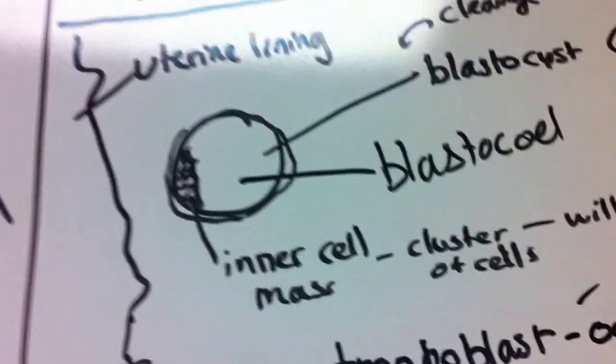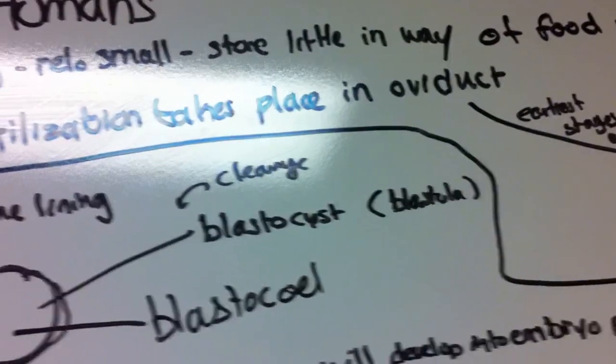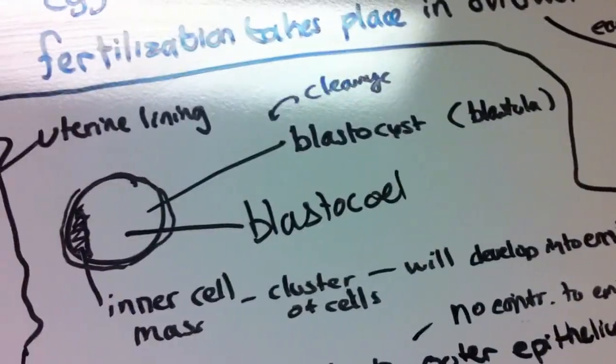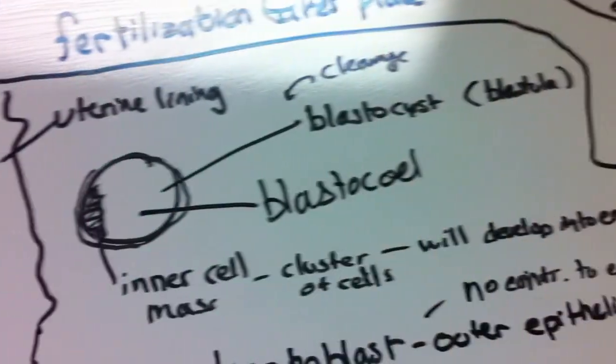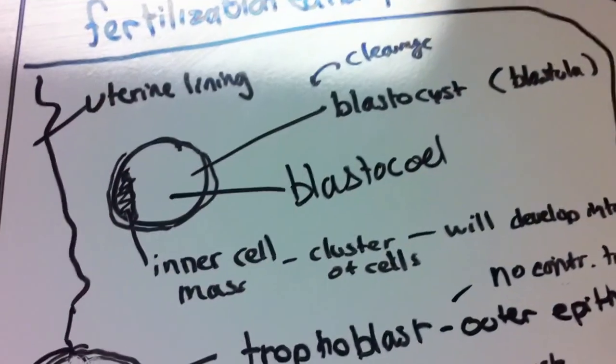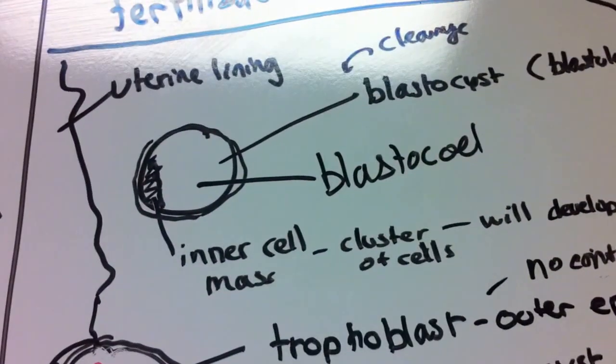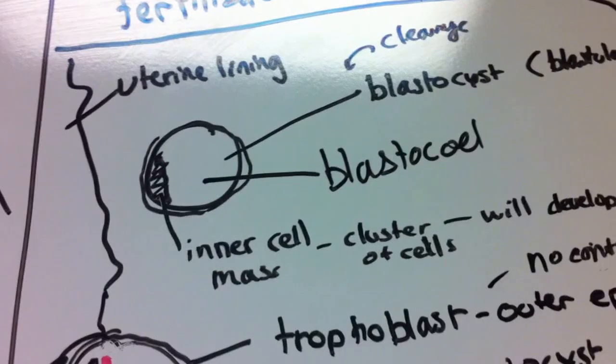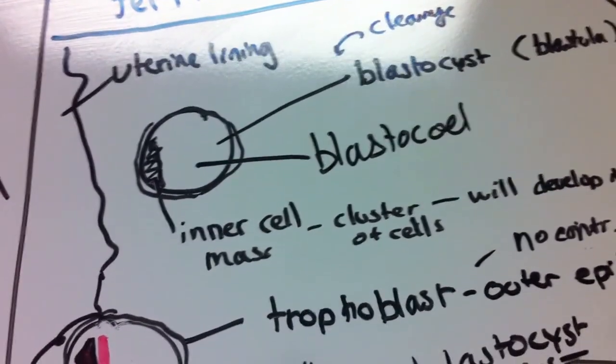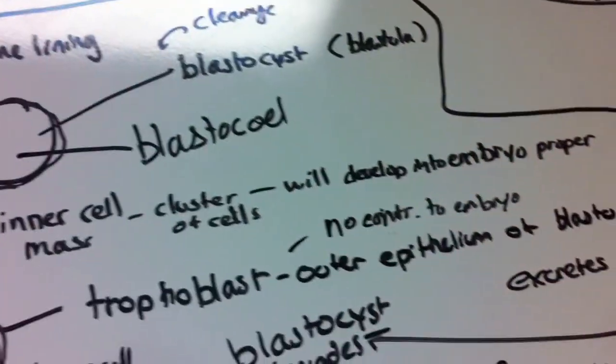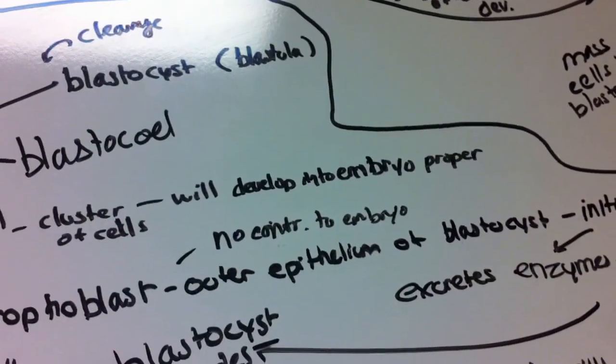Moving on to gastrulation for humans. After cleavage, our blastocyst wants to go into the uterine lining. On the side of the blastocyst is our inner cell mass, which is a cluster of cells that will eventually develop into the embryo proper.